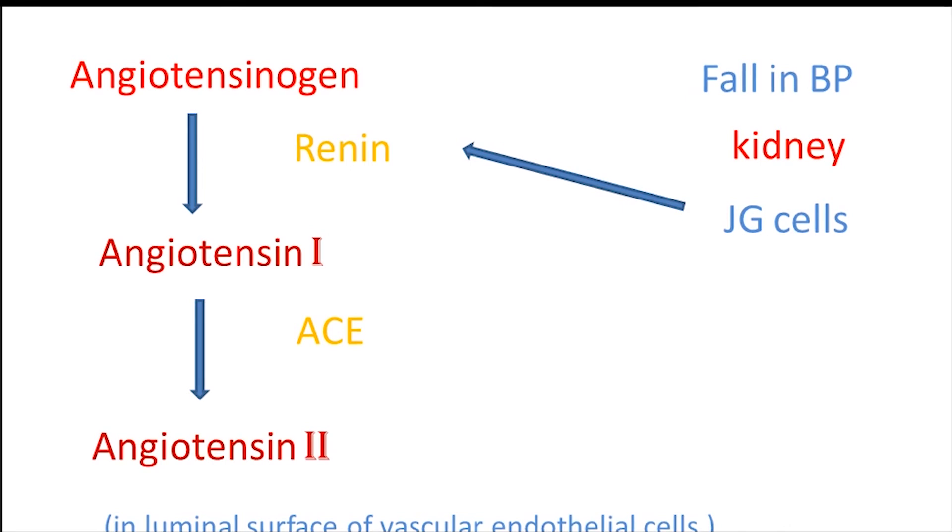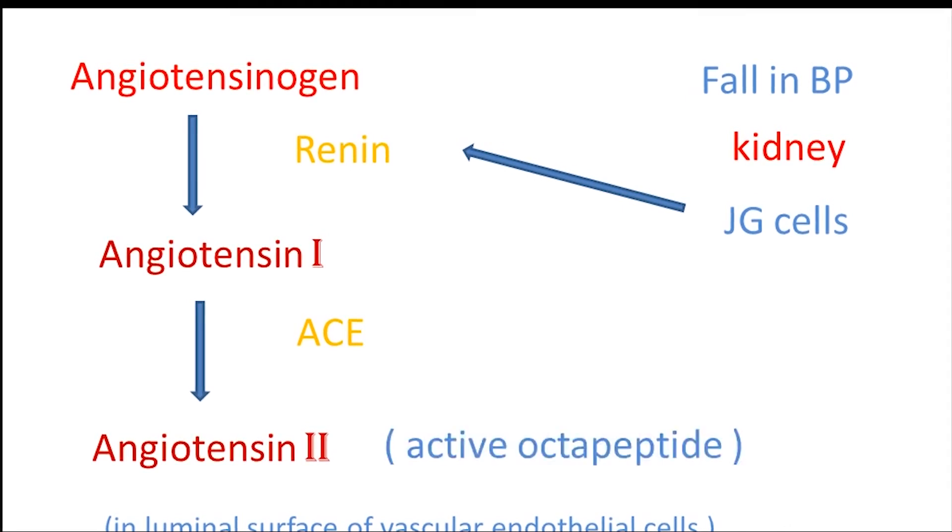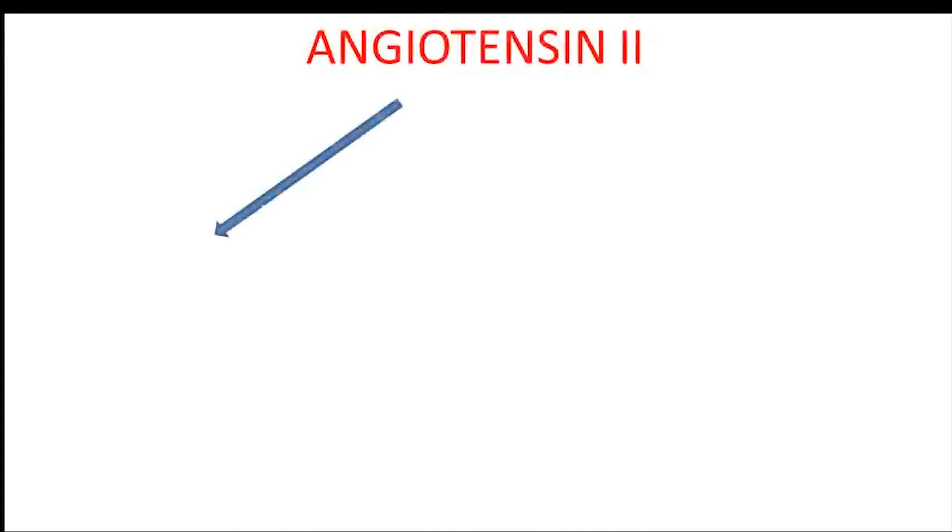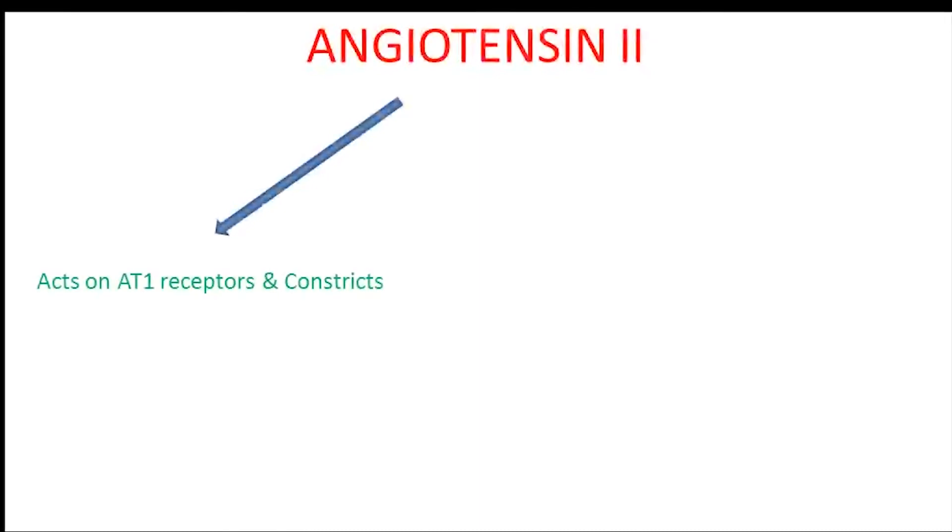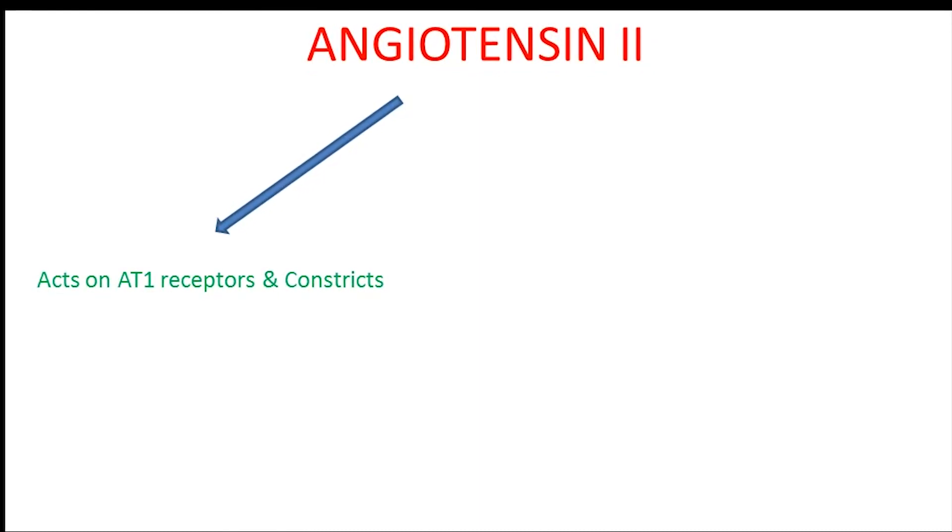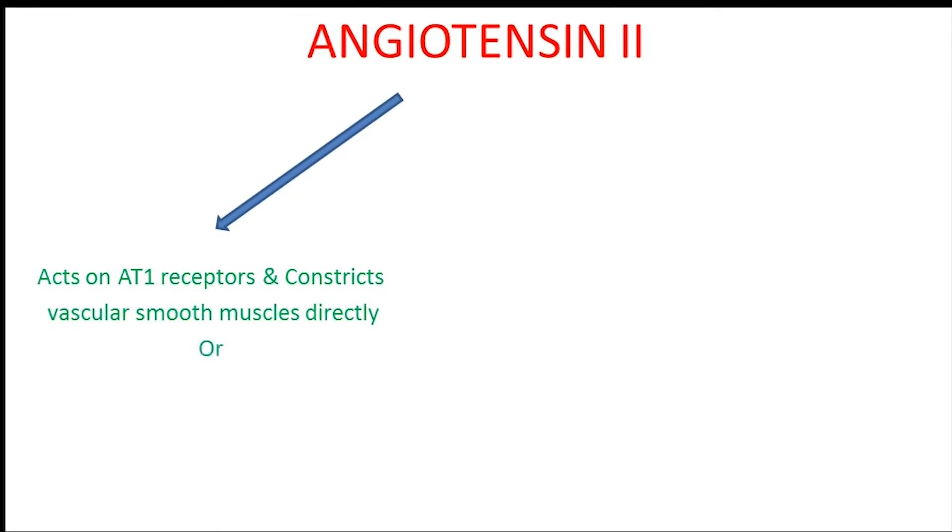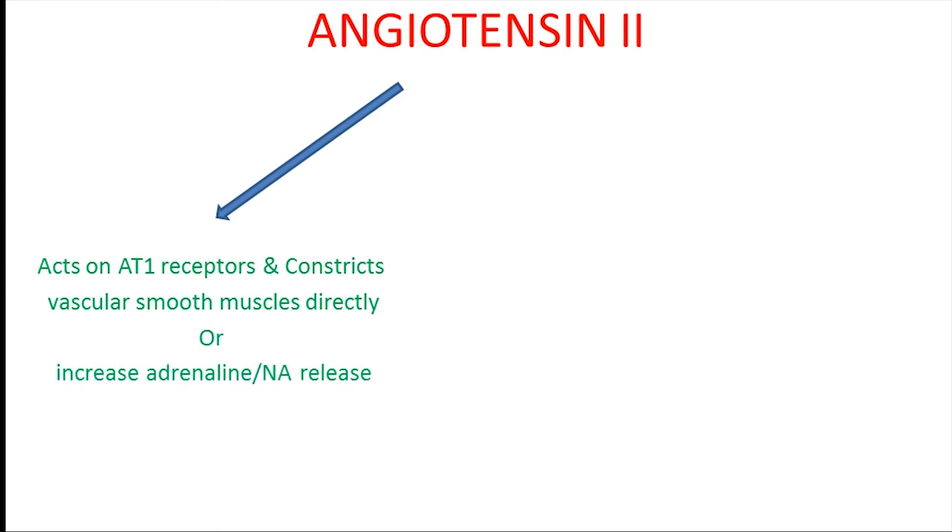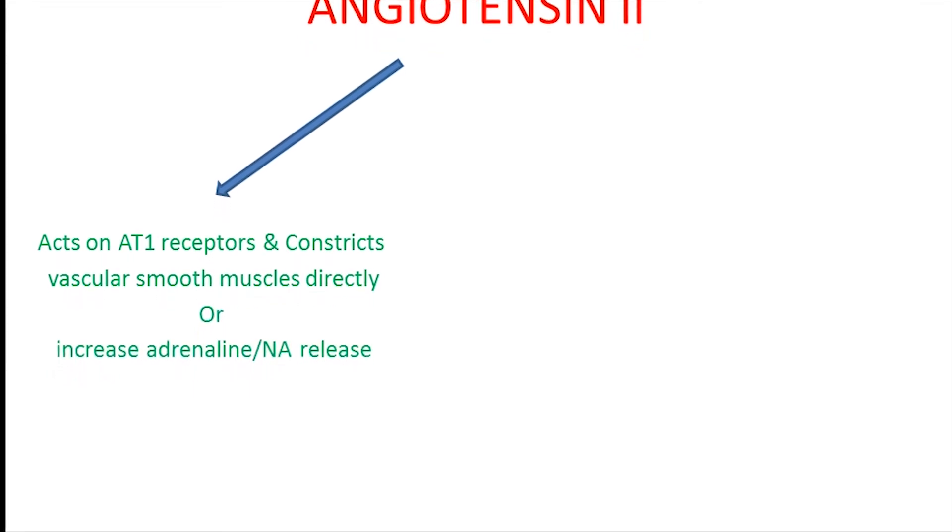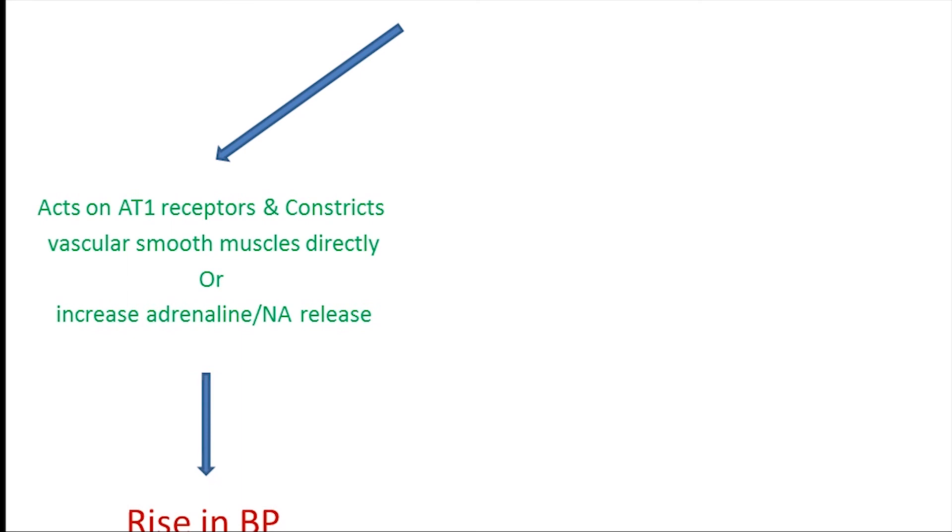Now, this angiotensin II has two major actions. First, angiotensin II is a potent vasoconstrictor. Angiotensin II acts on AT1 receptors and constricts the vascular smooth muscle directly, or by increasing adrenaline and noradrenaline release. This will lead to a rise in blood pressure.